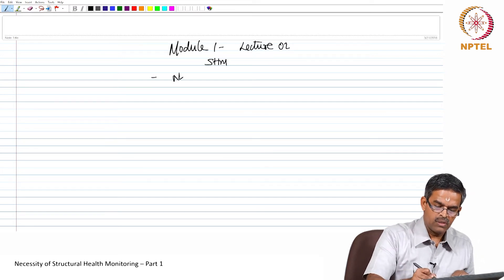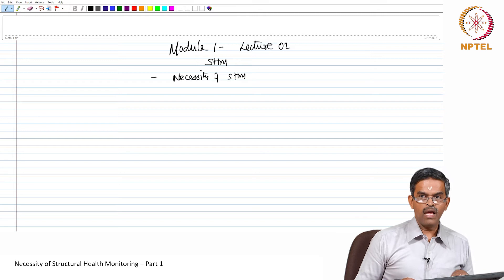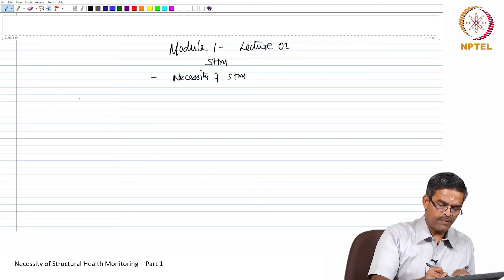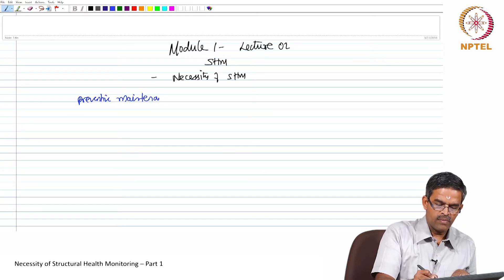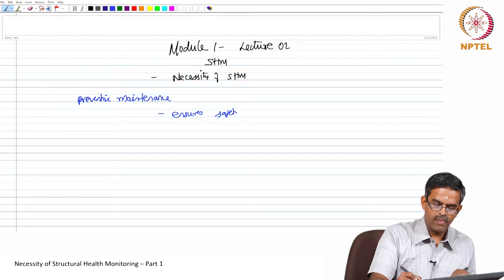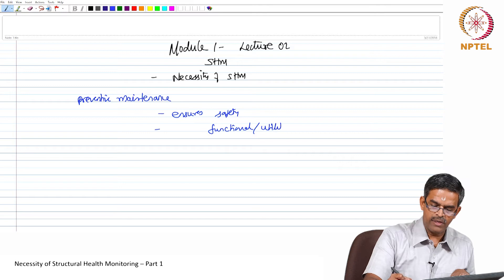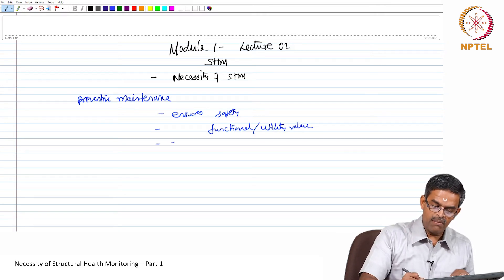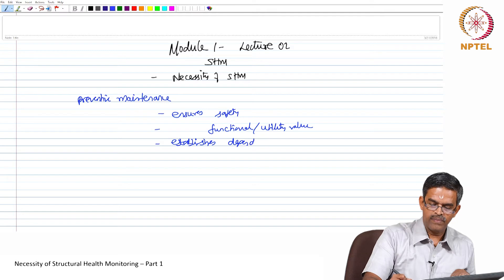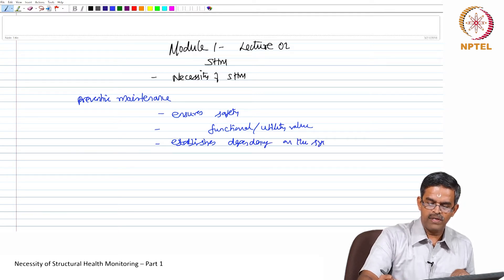In this lecture, we will talk about the necessity of SHM. In the last lecture, we understood that preventive maintenance plays a very important role by ensuring safety, functional or utility value, and establishes dependency on the system when it is demanded.